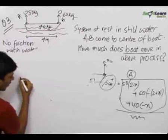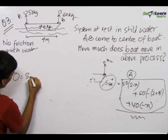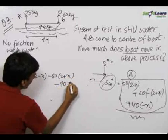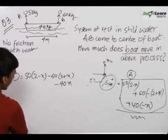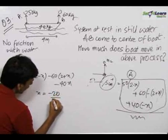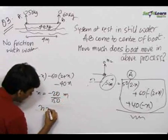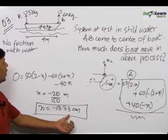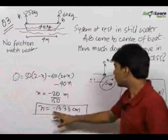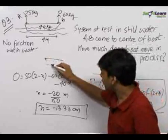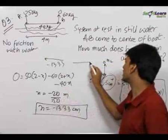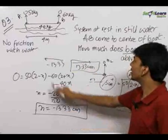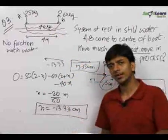Solving the equation: 0 = 50(2 − x) − 60(2 + x) − 40x, which gives x = −20/150 meters, that is x = −13.33 centimeters. The negative sign means the boat actually moved 13.33 cm in the right direction. So the final answer is: the displacement of the boat relative to the water was 13.33 centimeters to the right side.